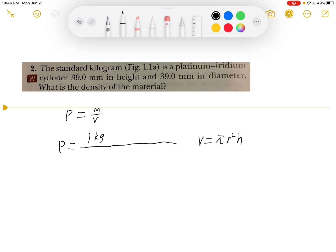So we're going to write π. The radius is half of the diameter, so it will be 39 divided by 2 millimeters.